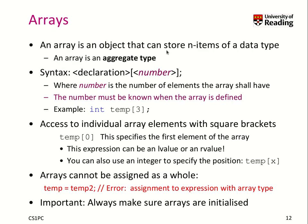An array is an object that can store n items of a given data type. When you declare a variable — like here we have temperature as an integer — we can use brackets to specify the number of elements we would like to have. The number must be known when the array is defined. In this case, there should be three integer values stored as part of the temperature variable.